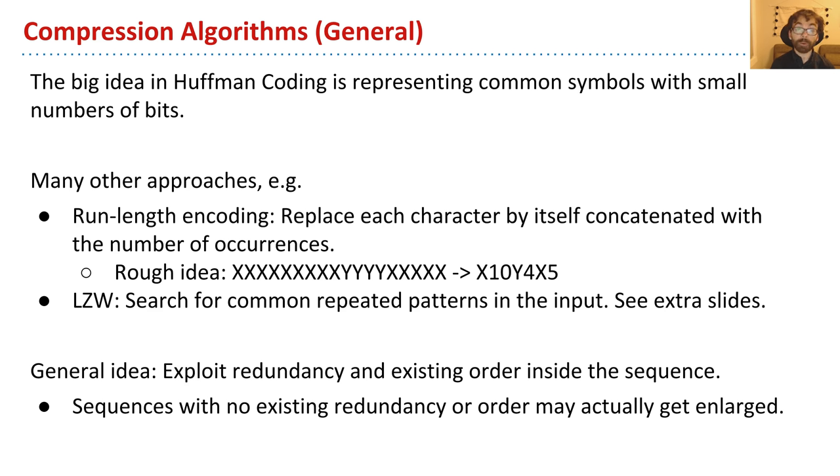Now there's lots of other approaches. For example, there's something known as run length encoding. And in this approach, you replace each character by itself, concatenated with the number of occurrences. So for example, if I have 10 x's, 4 y's, and then 5 x's again, we would write this out as x10, y4, x5, or something. So that's one approach that's totally different than Huffman coding.